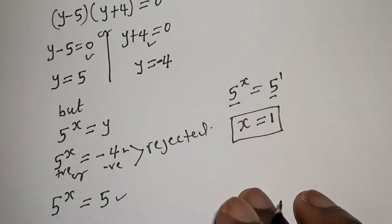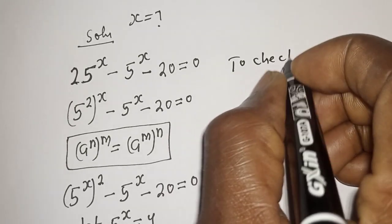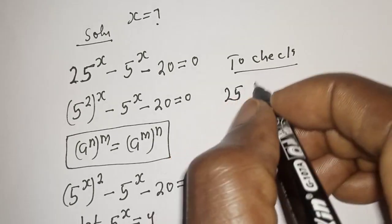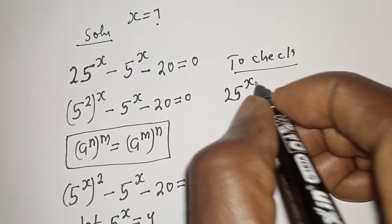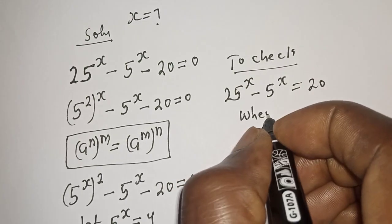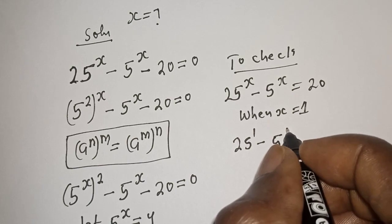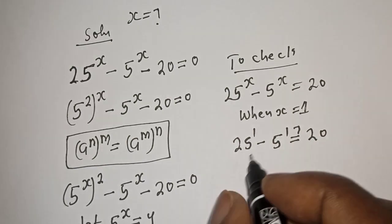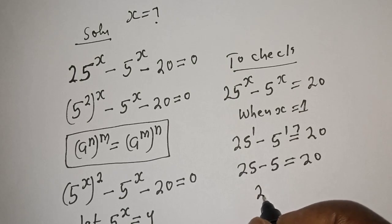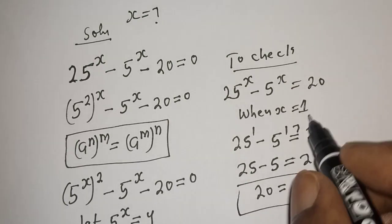Let's check to confirm our answer. The given equation is 25 raised to power s minus 5 raised to power s equals 20. When s equals 1: 25 raised to power 1 minus 5 raised to power 1 gives 25 minus 5 equals 20. The left-hand side equals 20, which equals the right-hand side 20. This satisfies the given equation at s equals 1.